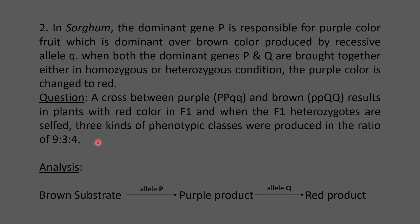Analyzing the sorghum problem: purple color fruit is dominant over brown color produced by the recessive allele Q. When both dominant genes are brought together, the purple changes to red — red is the ultimate product, purple is the intermediate product, and brown color produced by the recessive allele is the substrate. With the action of dominant allele P or enzyme P, the brown substrate is converted into purple product, which acts as substrate for dominant allele Q or enzyme Q, which then converts purple into red product.